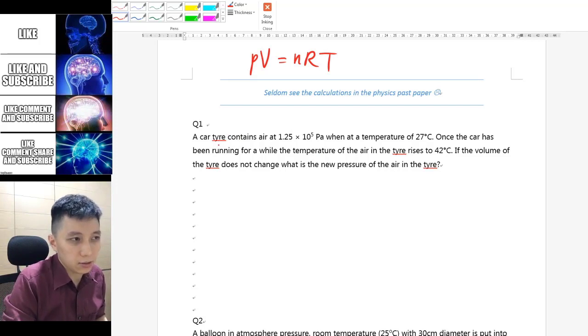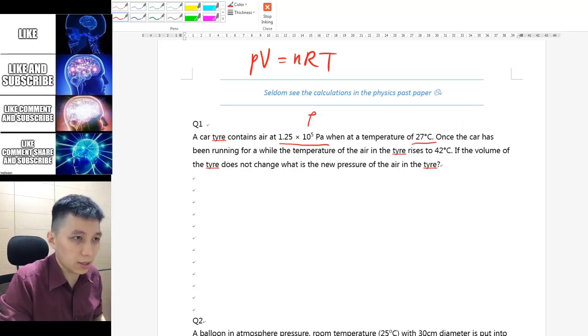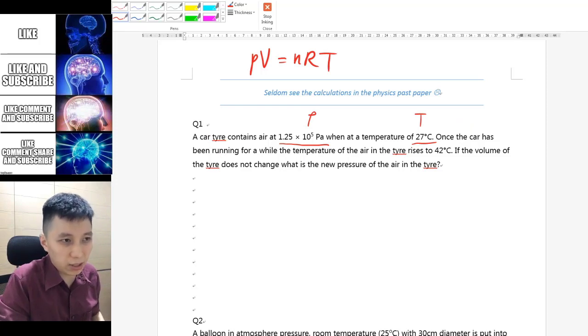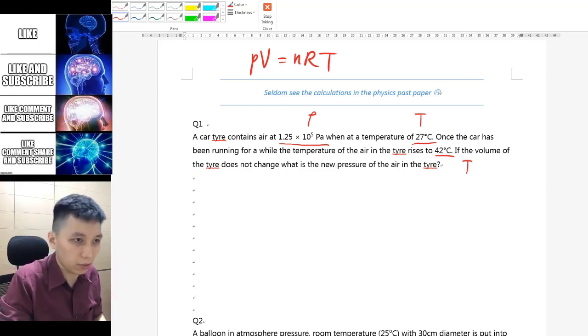Let's read question 1. There's a car tire that contains that much air at this pressure - here I will underline it and put it as P because that is representing pressure, this is temperature T, and now it said it's been running and the temperature rise to this, this is also T.